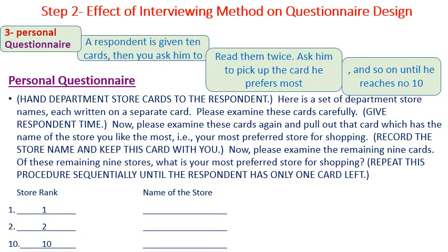Number 3: personal questionnaire. A respondent is given 10 cards. The interviewer asks the respondent to read them twice. After that, the interviewer will ask the respondent to pick up the card he prefers most — which includes the department store he prefers most — and so on until he reaches number 10.